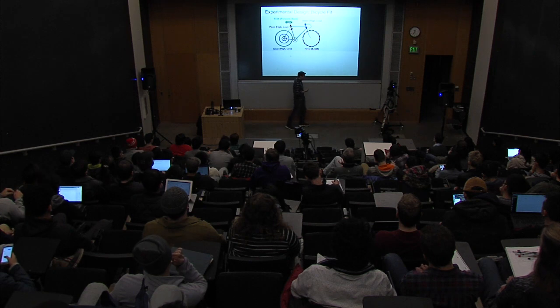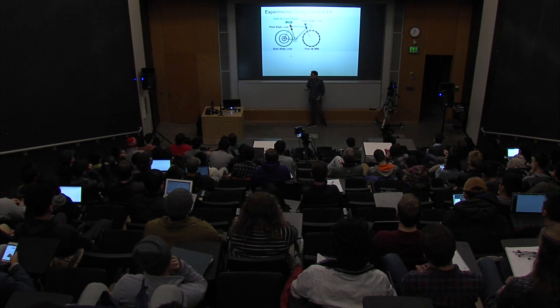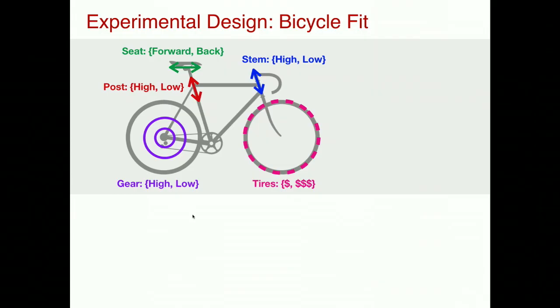To demonstrate how this works, I want to go through a very simple example. I usually bike to work, and one thing that's always bugged me is: did I actually fit my bike properly? There are a lot of different attributes — the seat can be forward or back, the post height can be high or low, the stem height can be high or low. If I'm trying to maximize speed or efficiency, is it better to be in a high gear and pedal slowly or in a low gear and pedal faster?